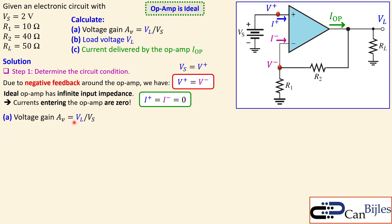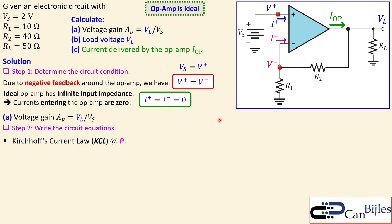For case one, the voltage gain Av is the load voltage over the source voltage. The next step is to write the circuit equations. We develop Kirchhoff's current law at node P. We assign current directions: I1 flows from right to left, and the load current IL flows downward.